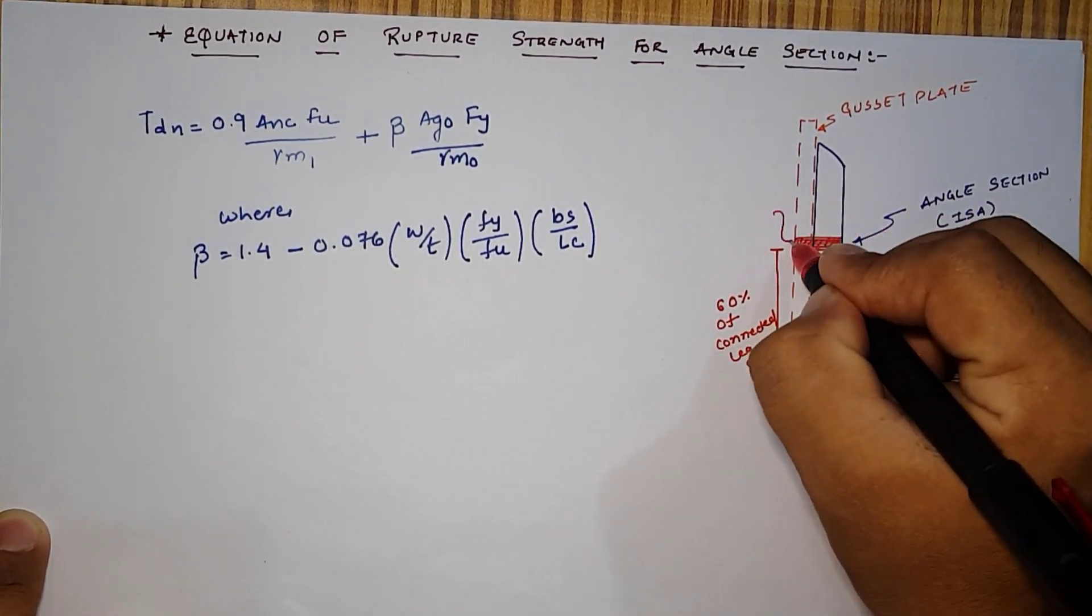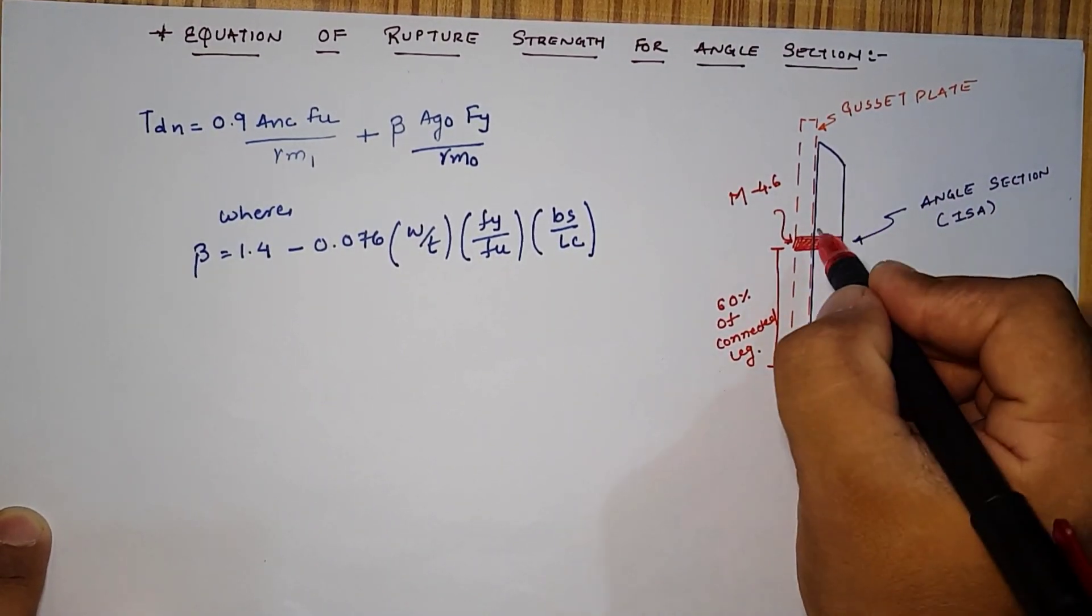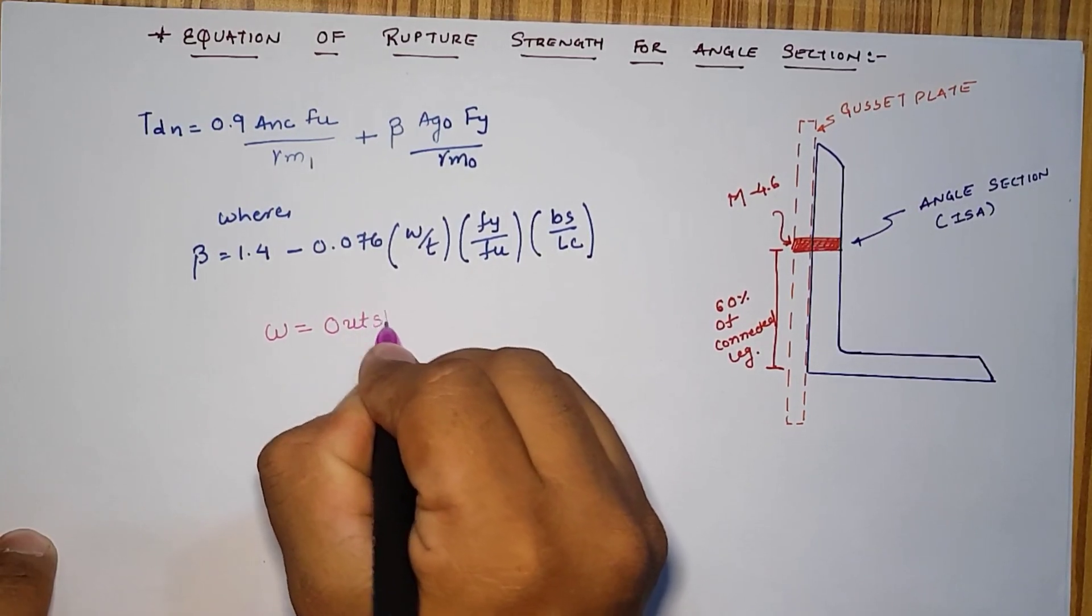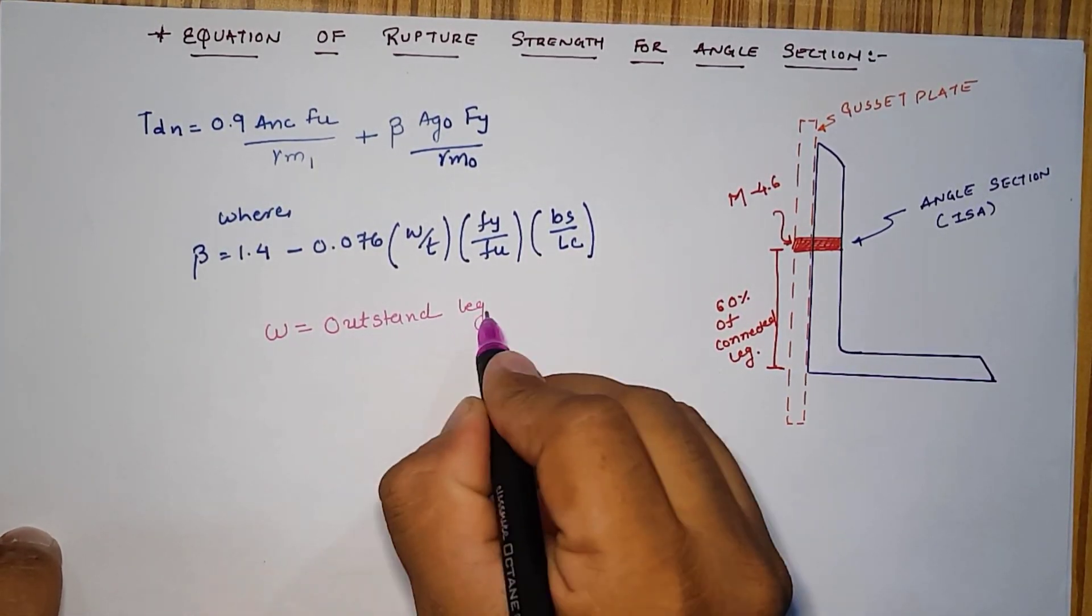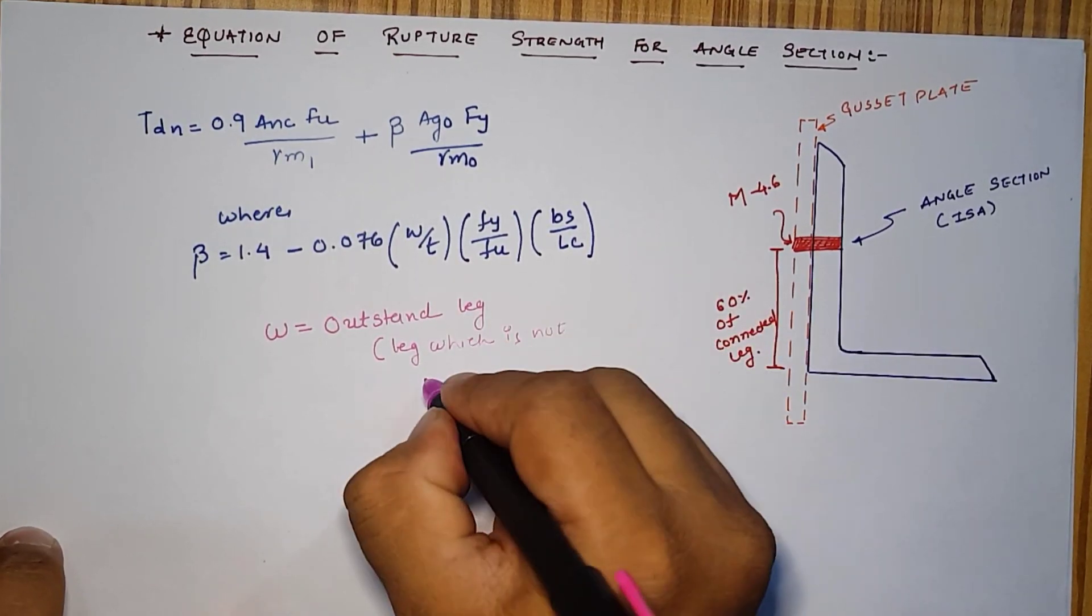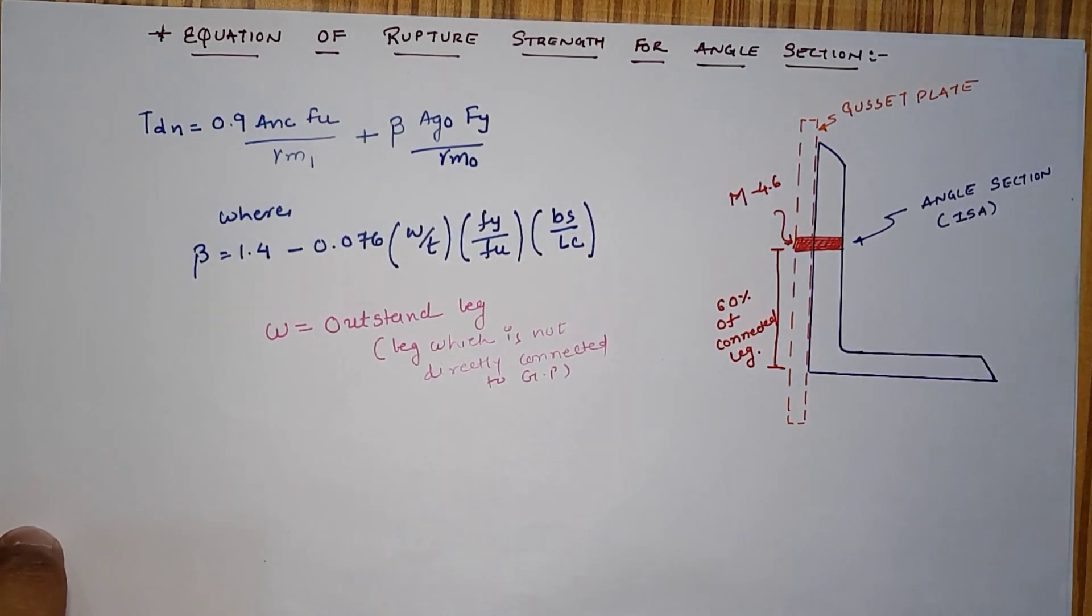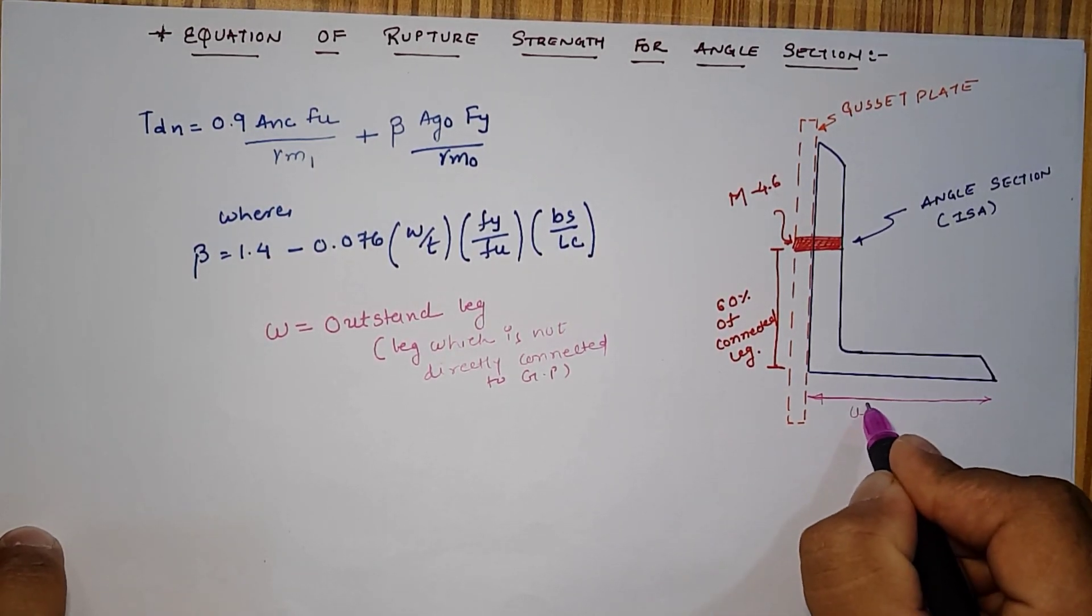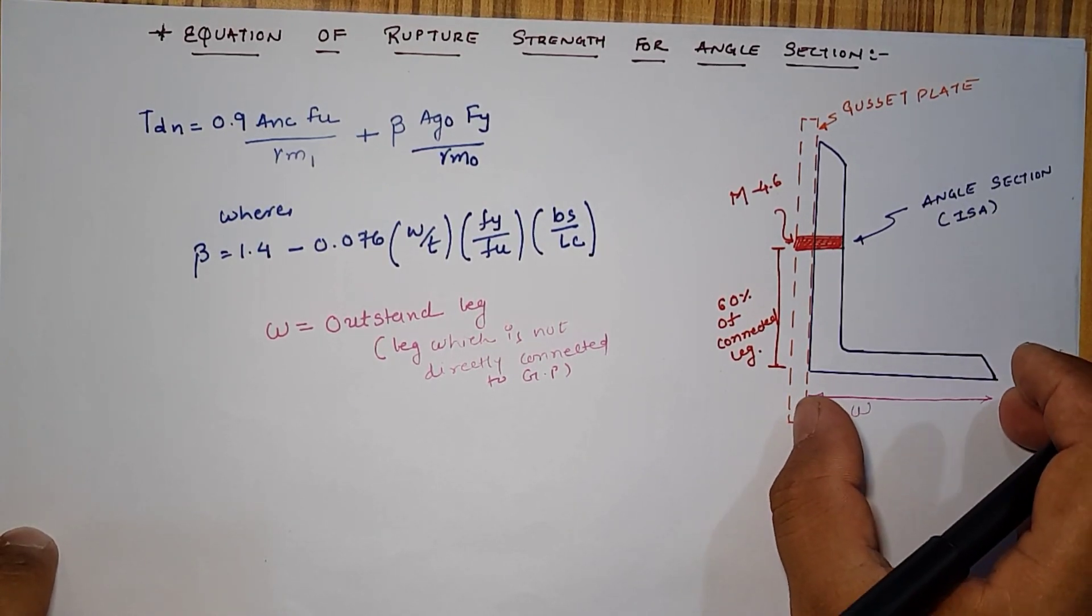Assume that the bolt diameter is given as M20 and grade is 4.6, whatever the diameter is given according to that we have to remove the diameter of hole. Now W means what? According to the clause, W is outstand leg. Outstand leg means the leg which is not directly connected to gusset plate.